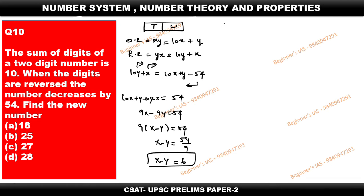After finding that, check the statement again. The sum of the digits is 10, which means X plus Y equals 10. We now know the second equation: X minus Y equals 6.